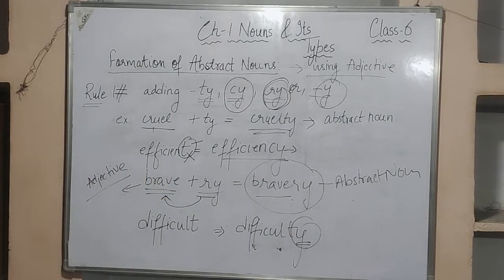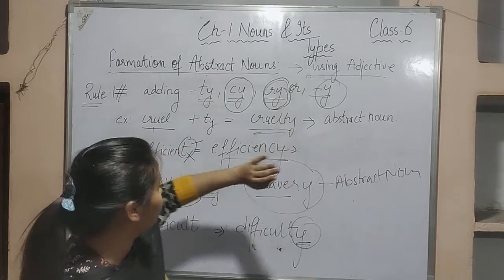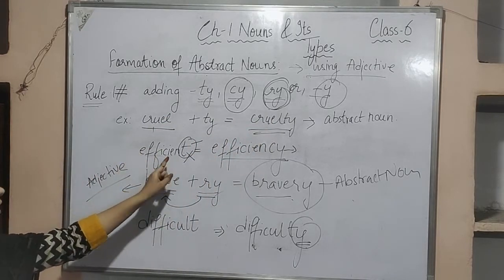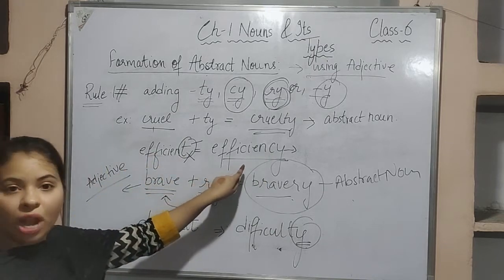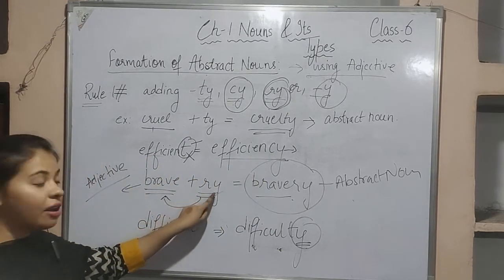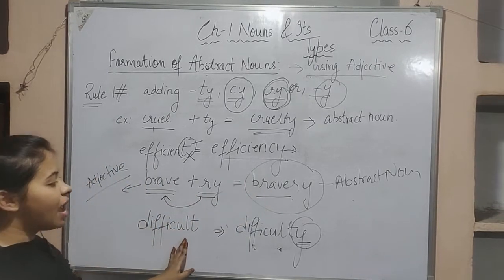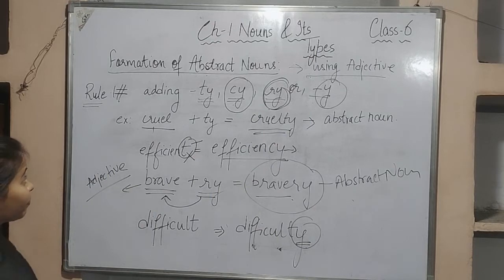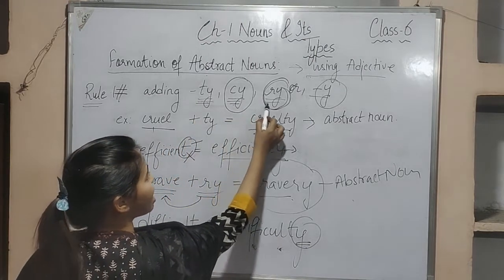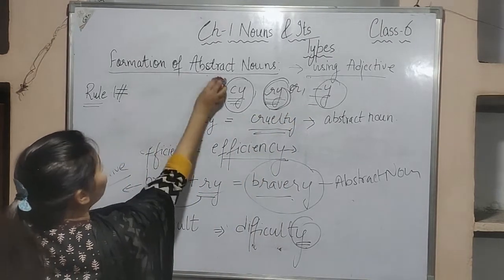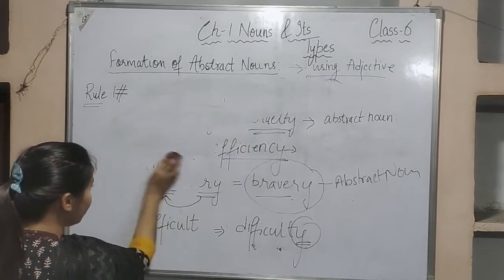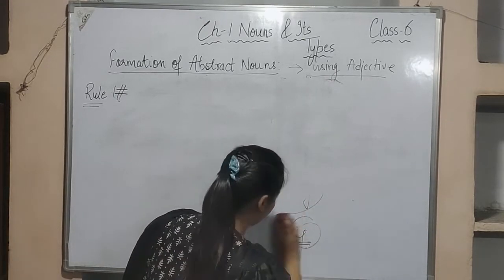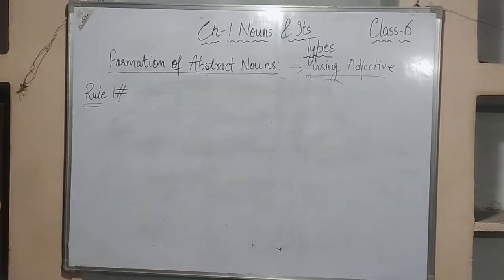So that is rule number one: cruel + ty = cruelty; efficient (remove t, add cy) = efficiency; brave + ry = bravery; difficult + y = difficulty. Please try to make notes so you can re-read them — it will be very beneficial when you go to solve the worksheets.